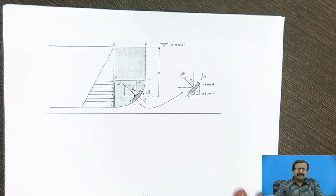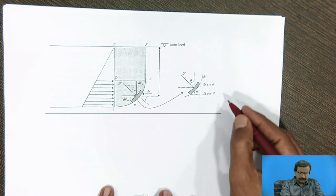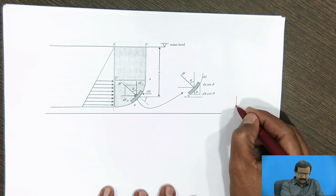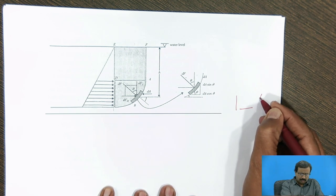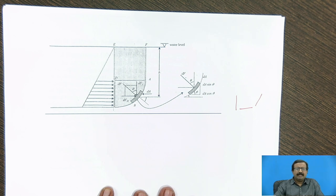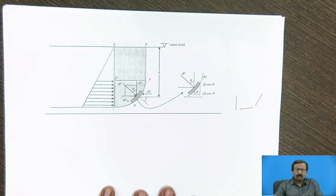In the last session we saw that when we calculate the force exerted on a plate kept vertical, horizontal, or inclined, the force is always perpendicular to the surface, because in fluid statics the normal force is the pressure per unit area.